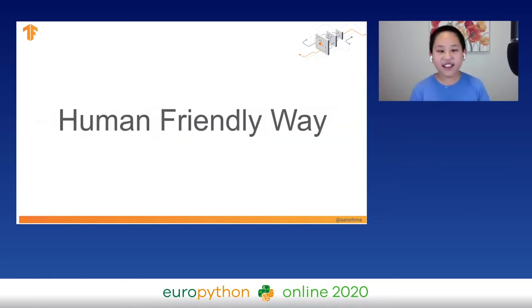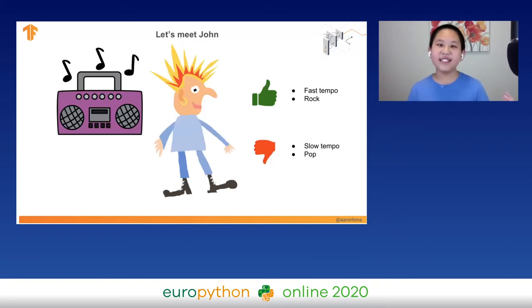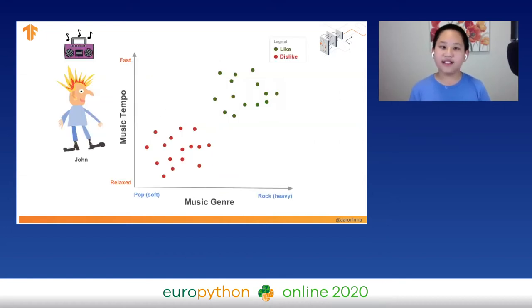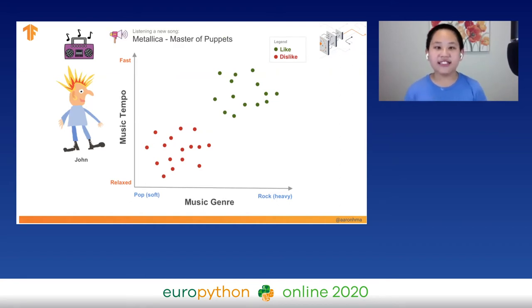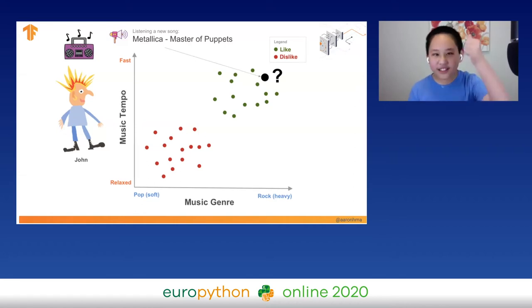Let's take that machine learning in a human-friendly way. Let's meet John. John loves music with a fast tempo and the genre of rock, but he dislikes music with a slow tempo and the genre of pop. We can plot his liked and disliked music on an XY-axis graph. The X-axis is the music genre from pop to rock, and the Y-axis is the music tempo from relaxing to fast. Let's say John was listening to a new song, Master of Puppets by Metallica — and if you guessed it was somewhere in the rock/fast area, you're correct.